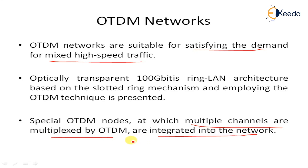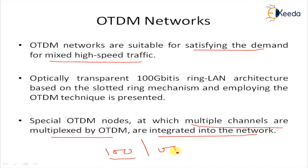In order to achieve a particularly high speed LAN fulfilling the requirements of high bandwidth applications, an optical transparent ring network with a maximum line rate of 100 gigabits per second employing OTDM techniques has been presented.